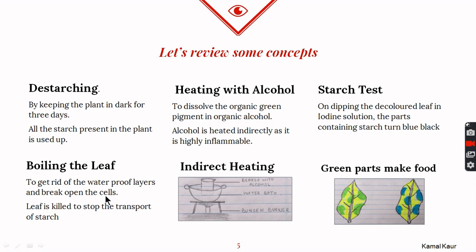Alcohol is used to dissolve the organic chlorophyll inside the leaf, but it is heated indirectly since it is highly inflammable. Indirect heating is done using a water bath — a metallic container in which water is heated, and the beaker containing alcohol is placed inside it. The starch test is done with a dilute solution of iodine, which turns starch blue-black.